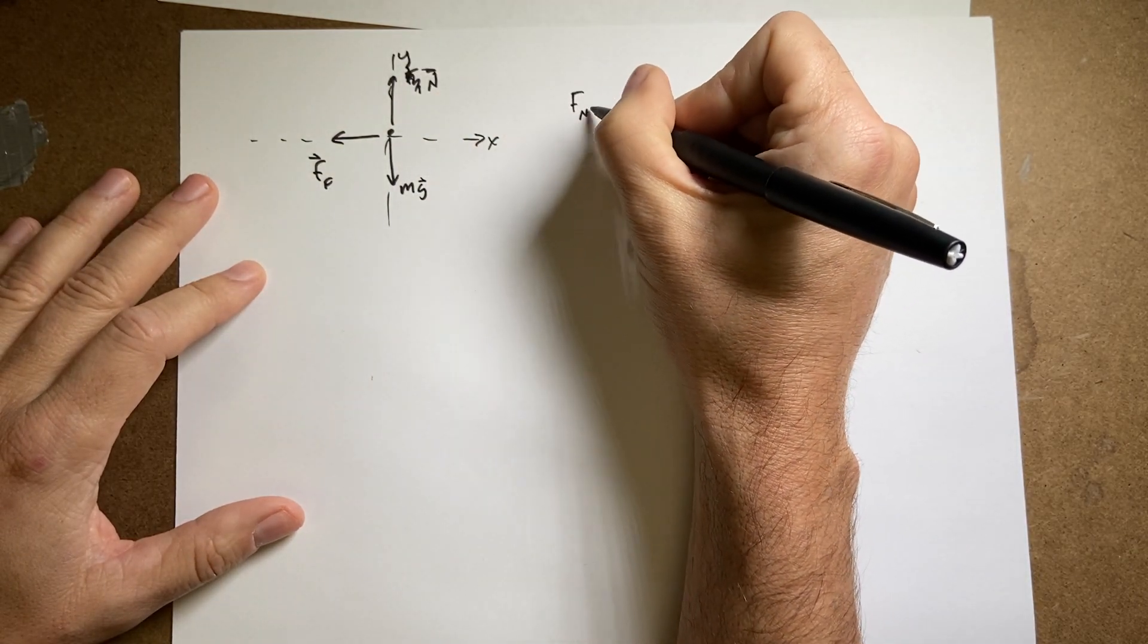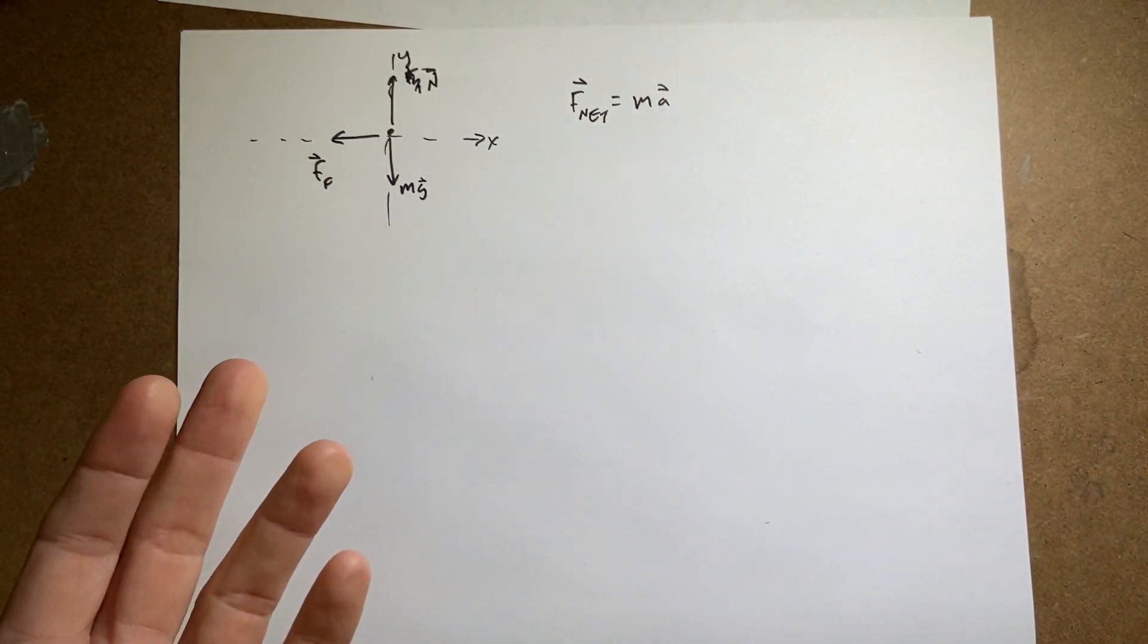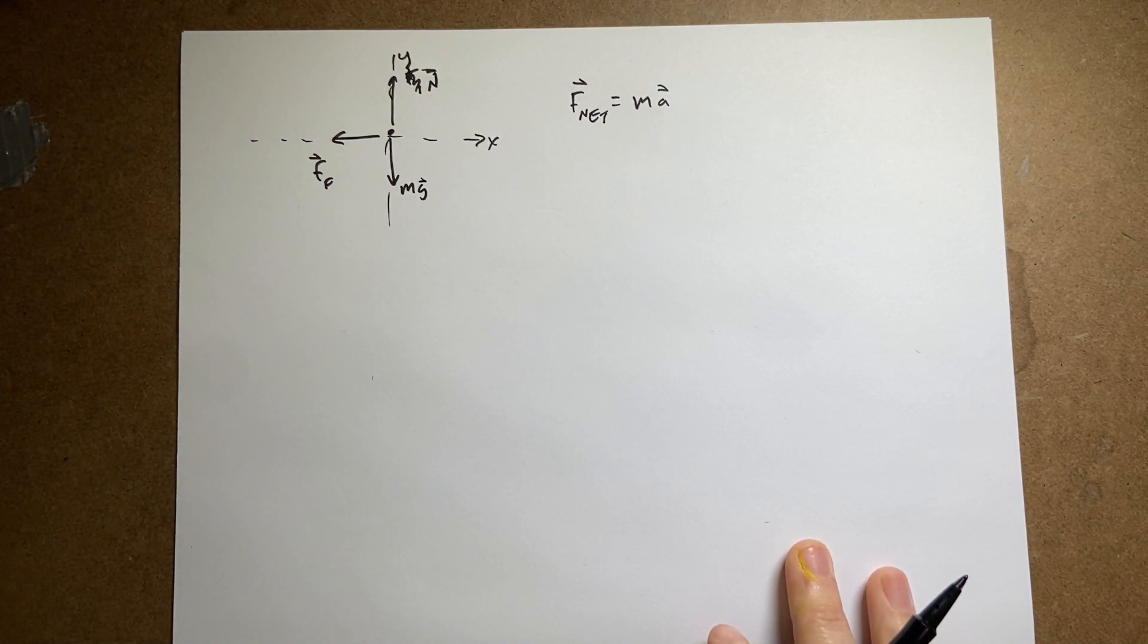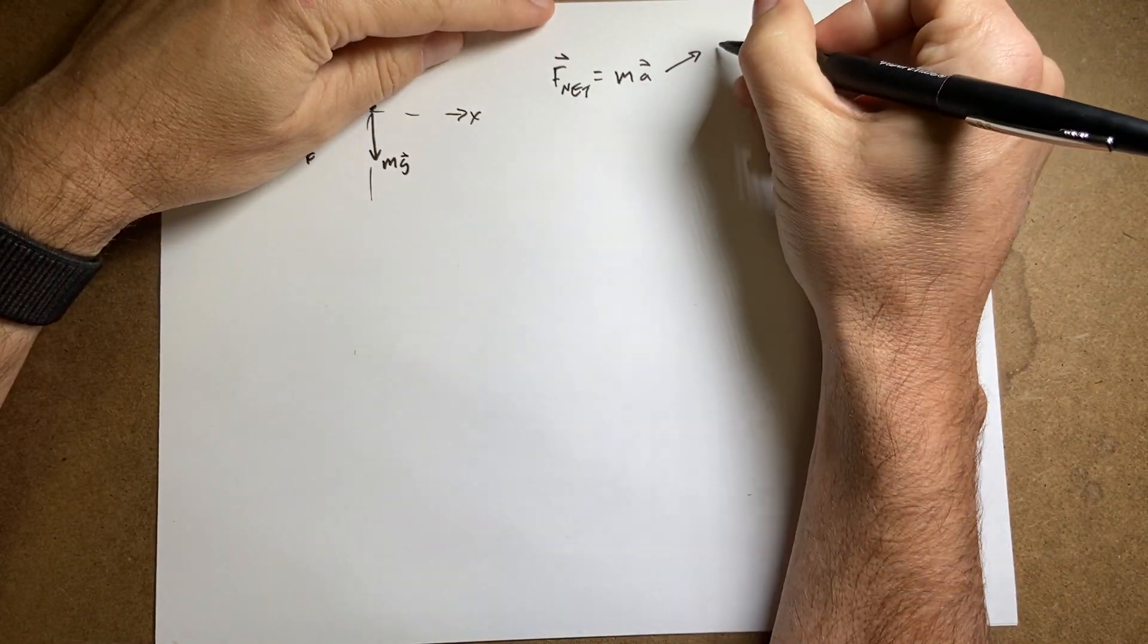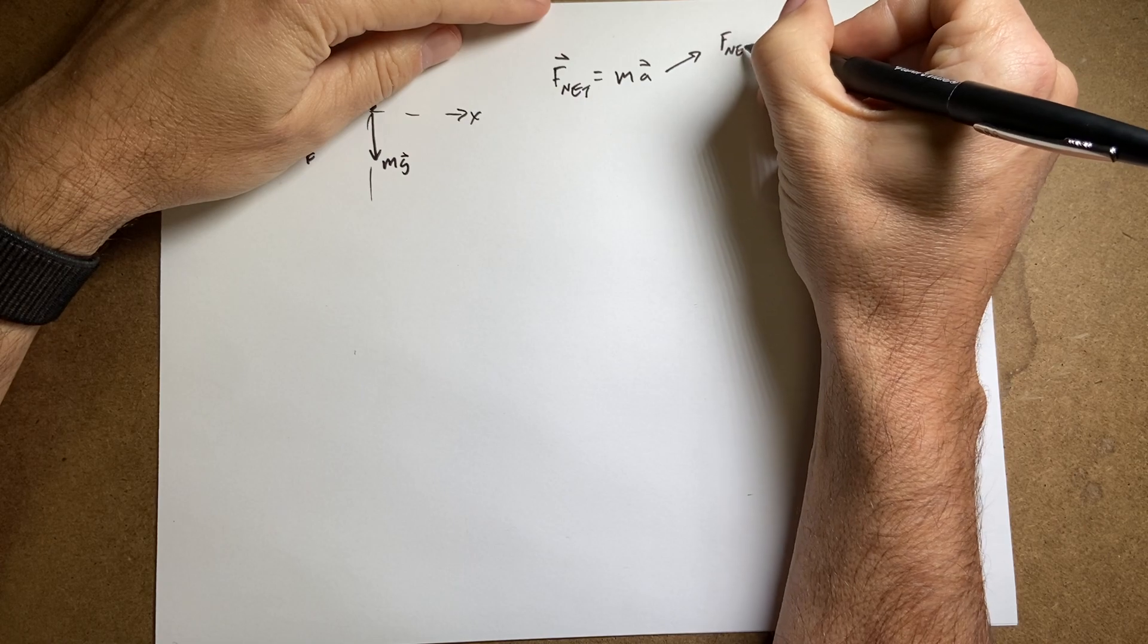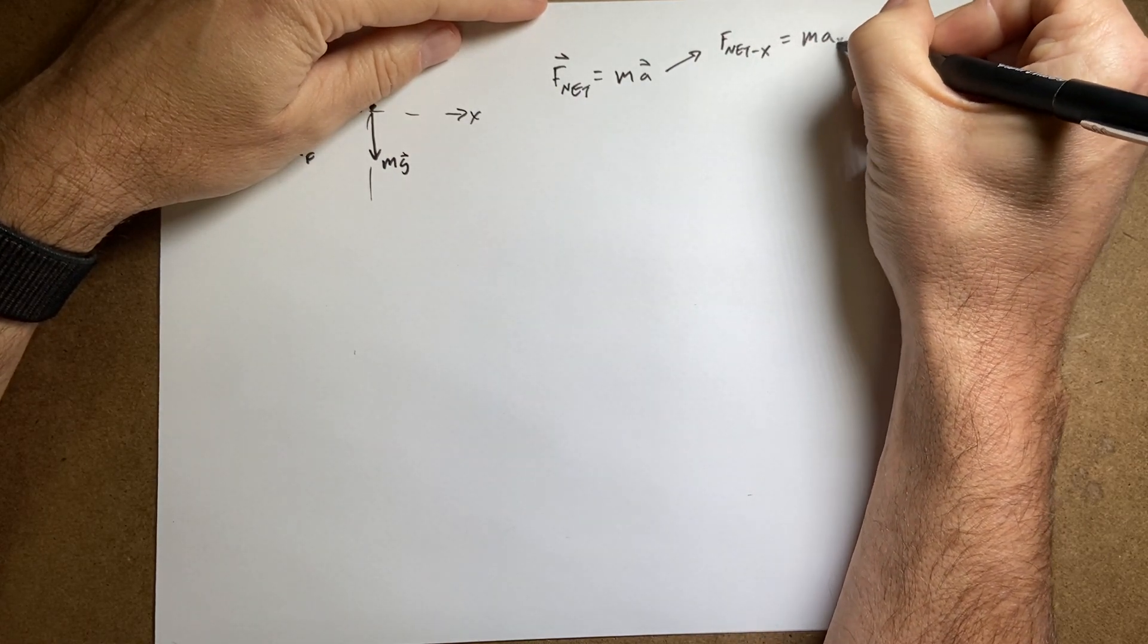So I have f net equals ma. Now, that's a vector equation. It's actually easier to deal with this as two scalar equations.